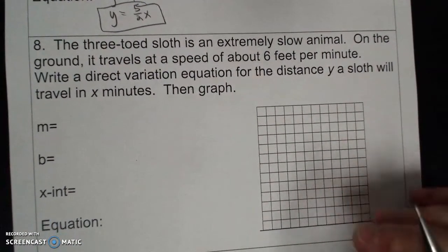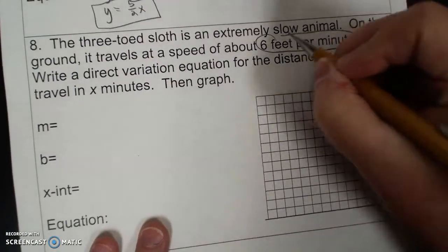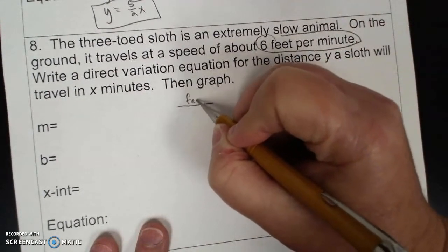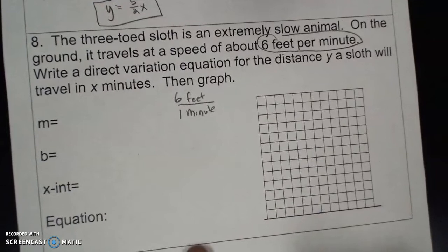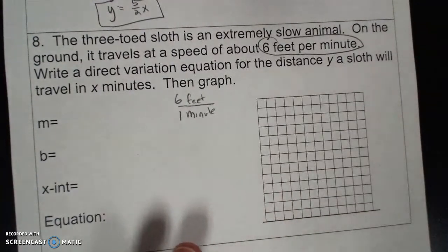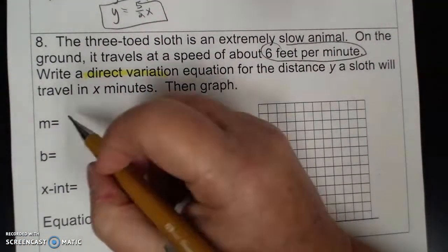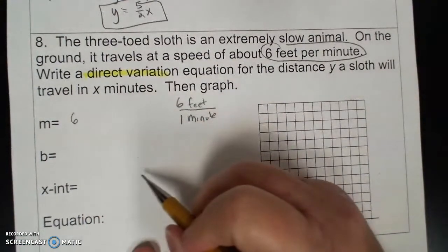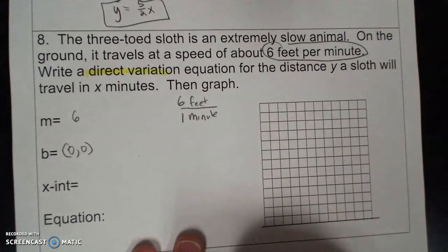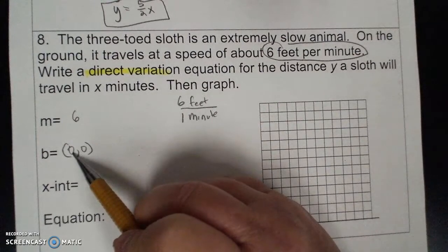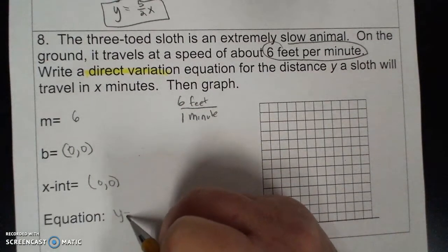Three-toed sloth is an extremely slow animal. On the ground, it travels at a speed of 6 feet per minute. That means I have feet per minute, 6 up here and 1 here. Write a direct variation for the distance. So my slope is 6, which means my y-intercept, because of direct variation, is always 0, (0,0) for a direct variation. Because the y-intercept goes through the origin. The x-intercept is also (0,0). And my equation is y = 6x.